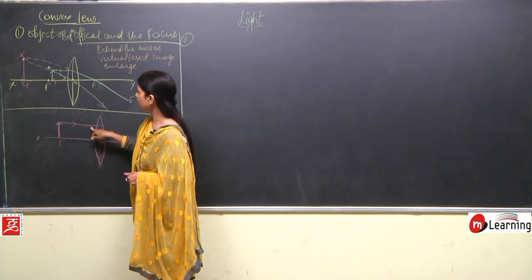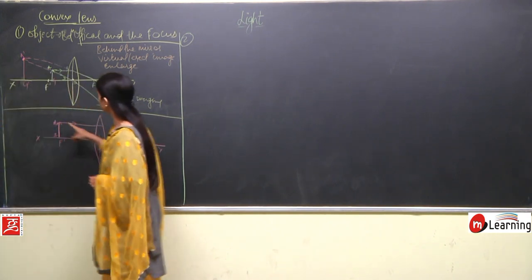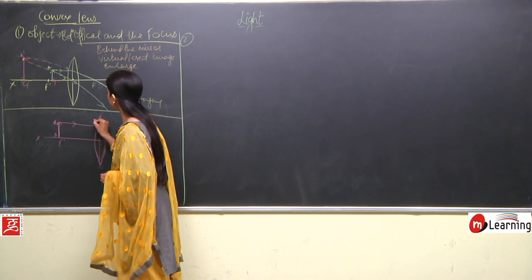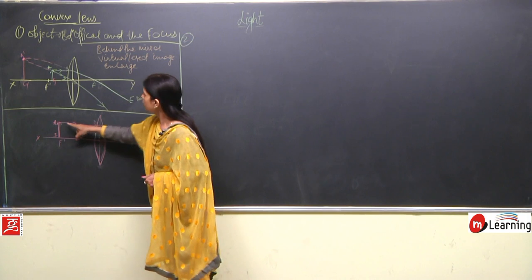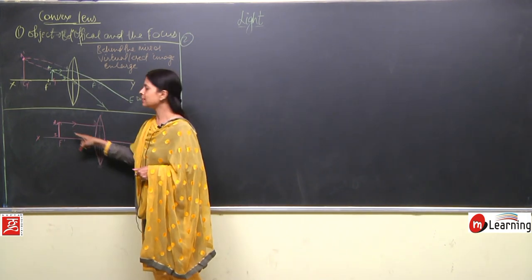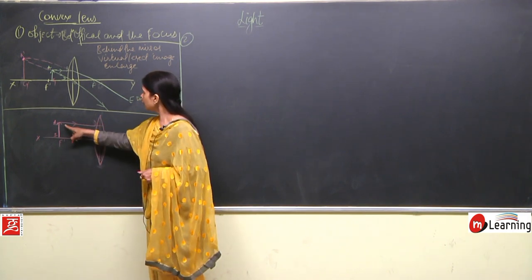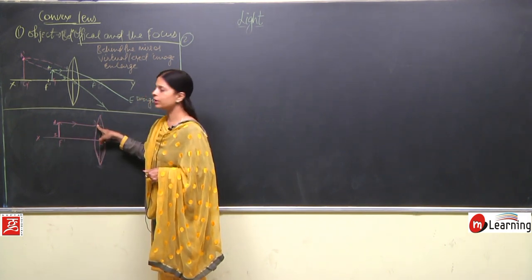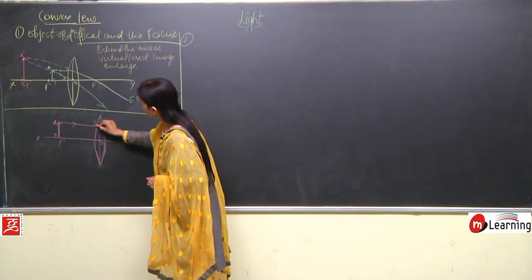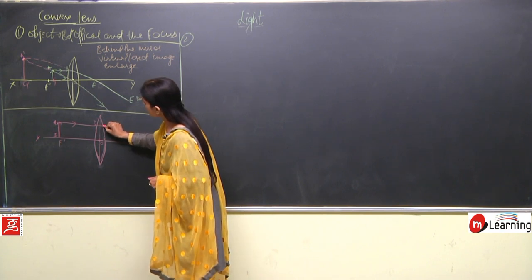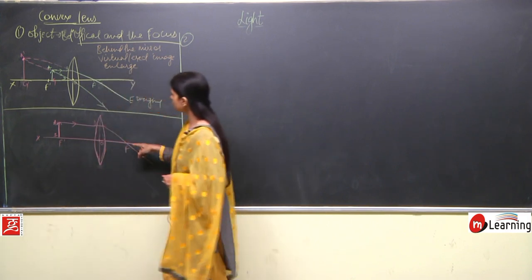This object is A-B. The ray of light A-D comes from point A and is parallel to the principal axis, falling on point D. After refraction, it is going to pass through the other focus. So this ray passes through the other focus.